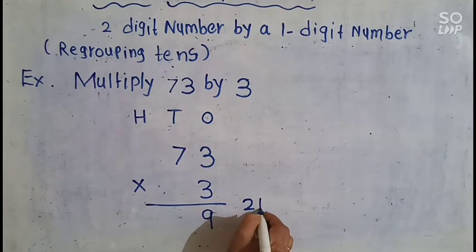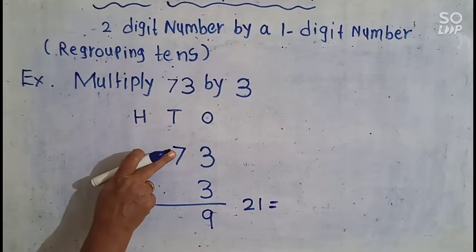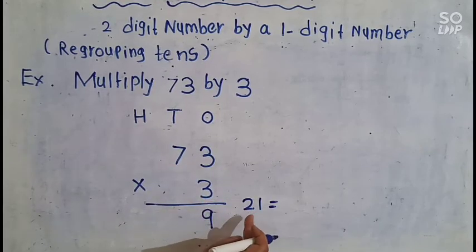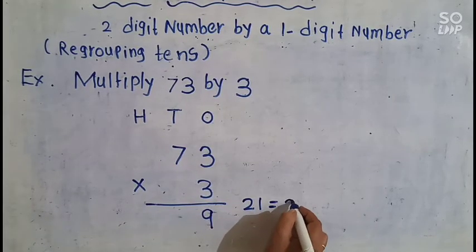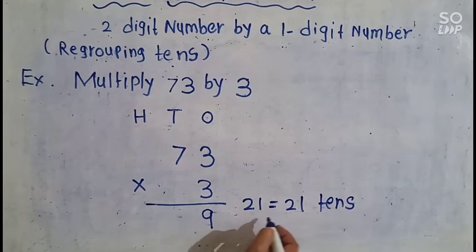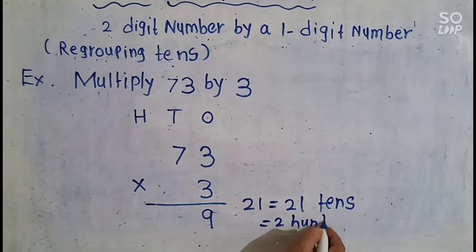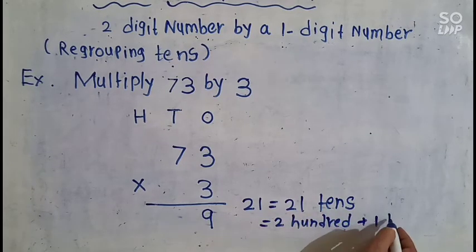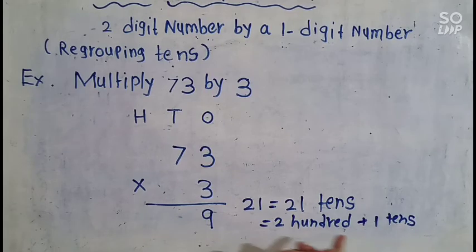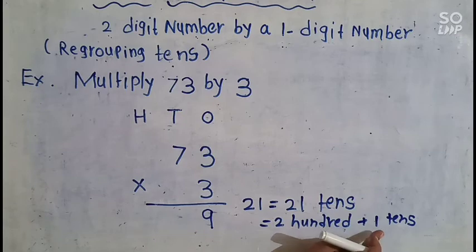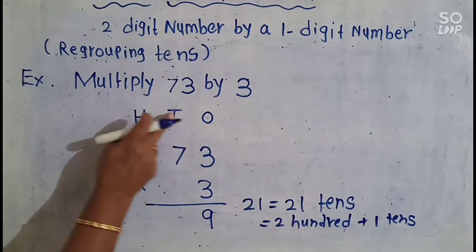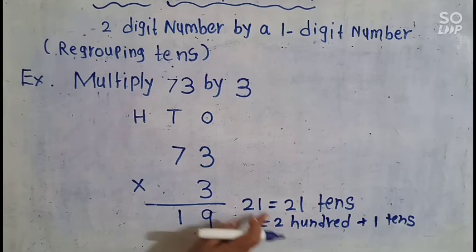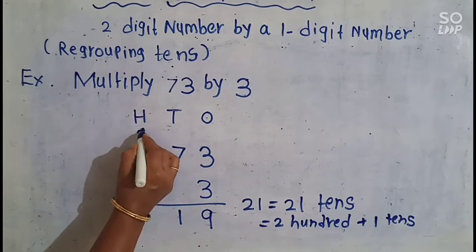Look here — this 21 means we did multiplication in the 10s place, so 3 7s are 21, meaning 21 tens. 21 tens equals 200 plus 1 ten. So we have to write 1 ten here in the 10s column, and this 200 we write in the 100s place.